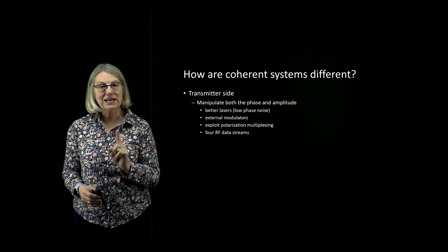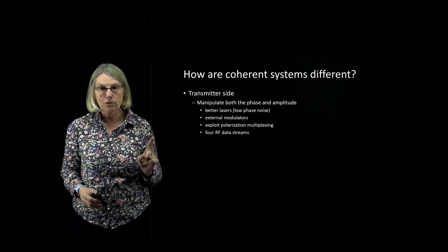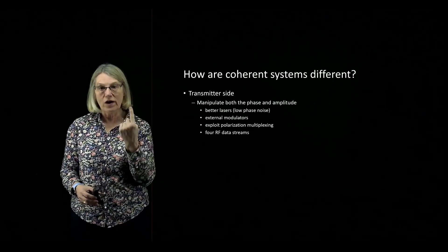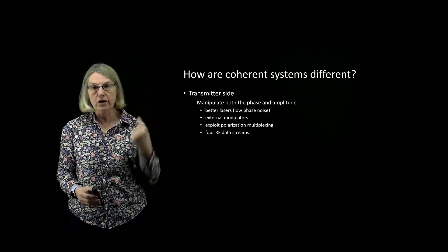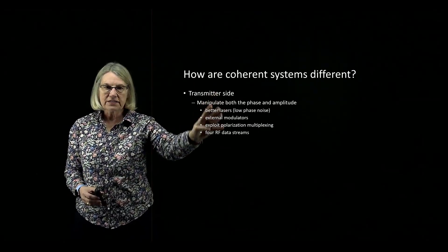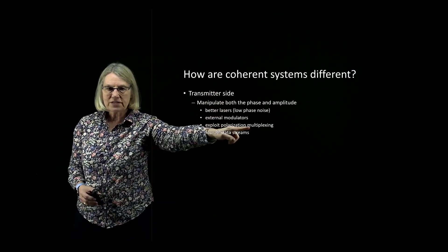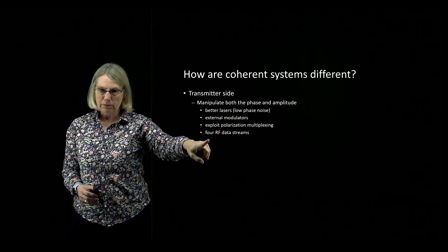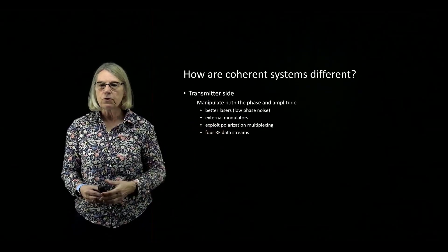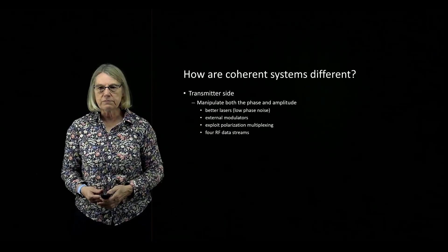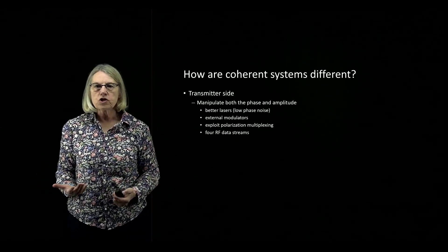For instance, if I'm sending a binary signal to an external modulator, there's one RF signal going up and down. But when I use coherent detection with polarization multiplexing, I'm going to have to manage four RF data streams. So of course that means more components as well.